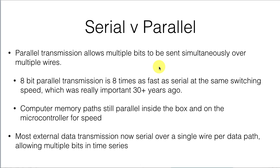There are two different ways to transmit data — serial and parallel — and you should be aware of them just to know there's a difference. Parallel transmission is more or less obsolete; the idea was to use eight lines to send data eight times faster by sending one bit on each line to get an eight-bit byte in one transfer. It's still important for computer memory — your 64-bit computer loads 64-bit wide words into the central processor on a parallel memory bus, and likewise our 8-bit microcontroller loads 8-bit words in parallel. But pretty much all external data transmission now is serial, going over a single wire per data path with multiple bits transmitted in a time series.